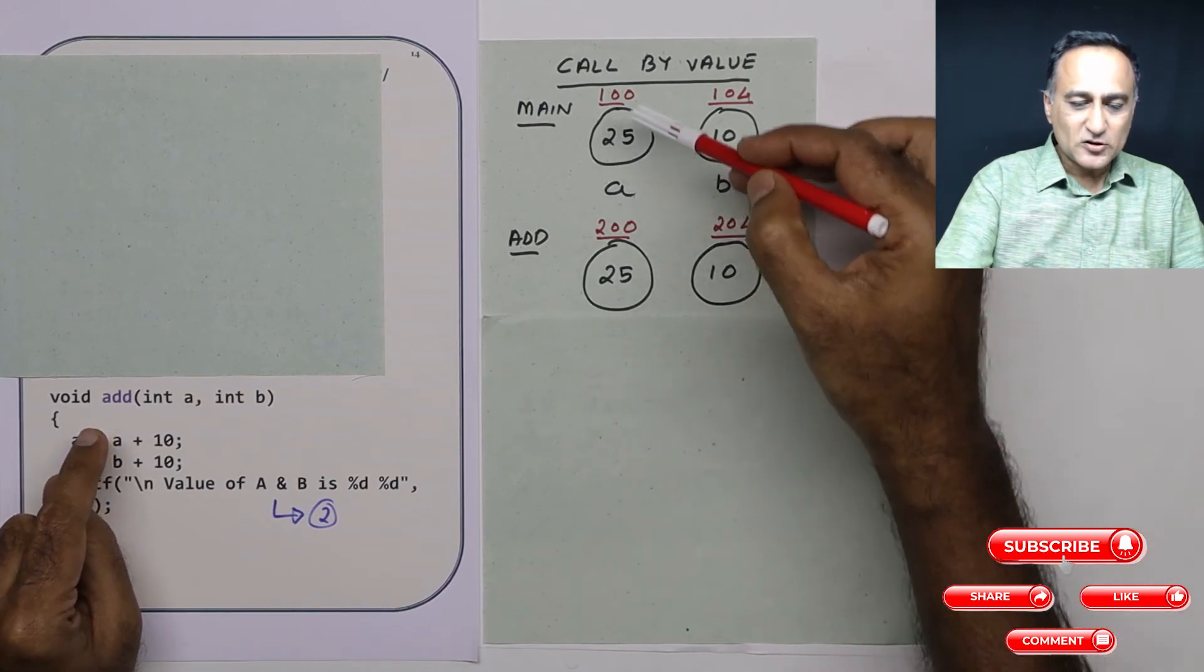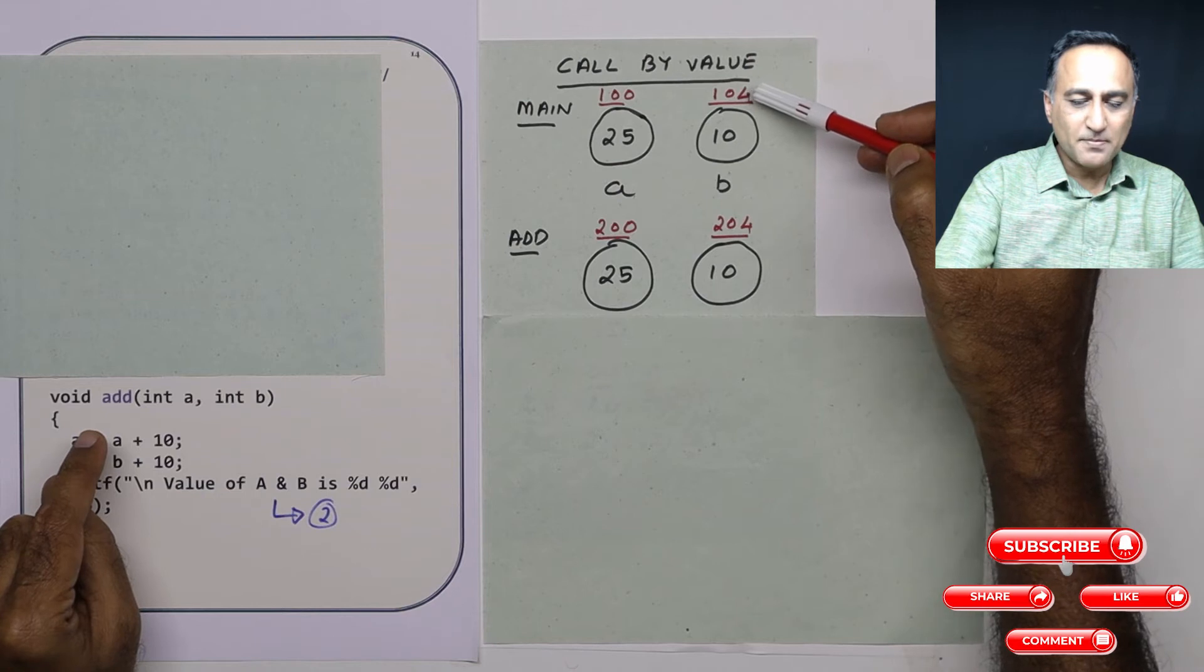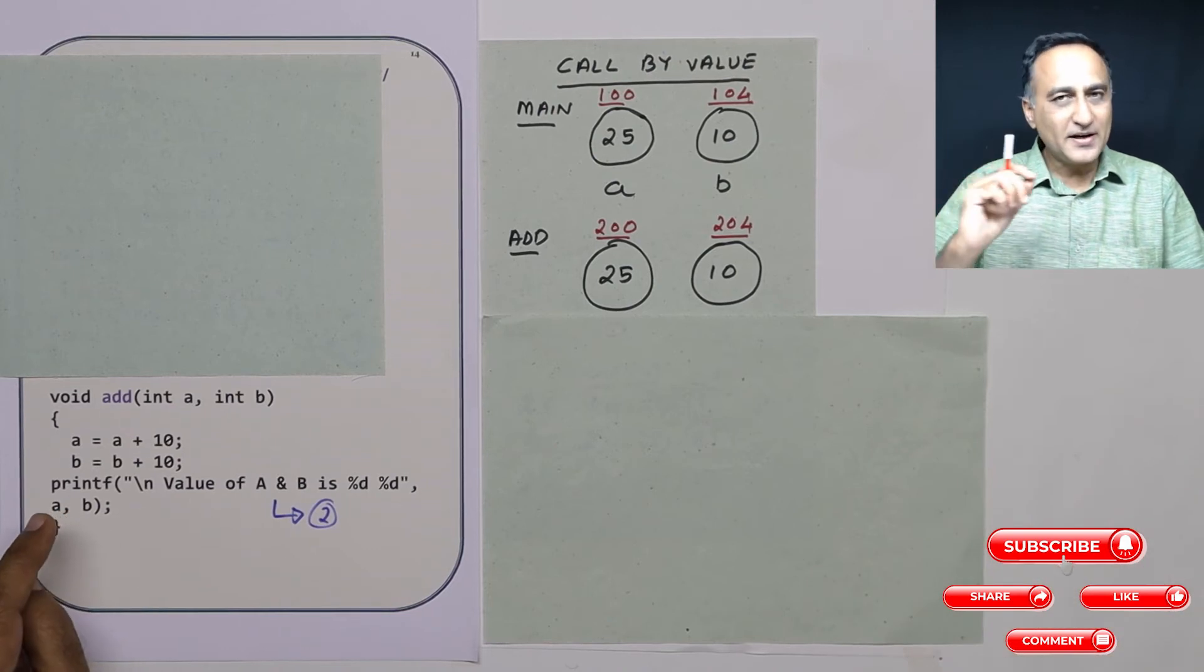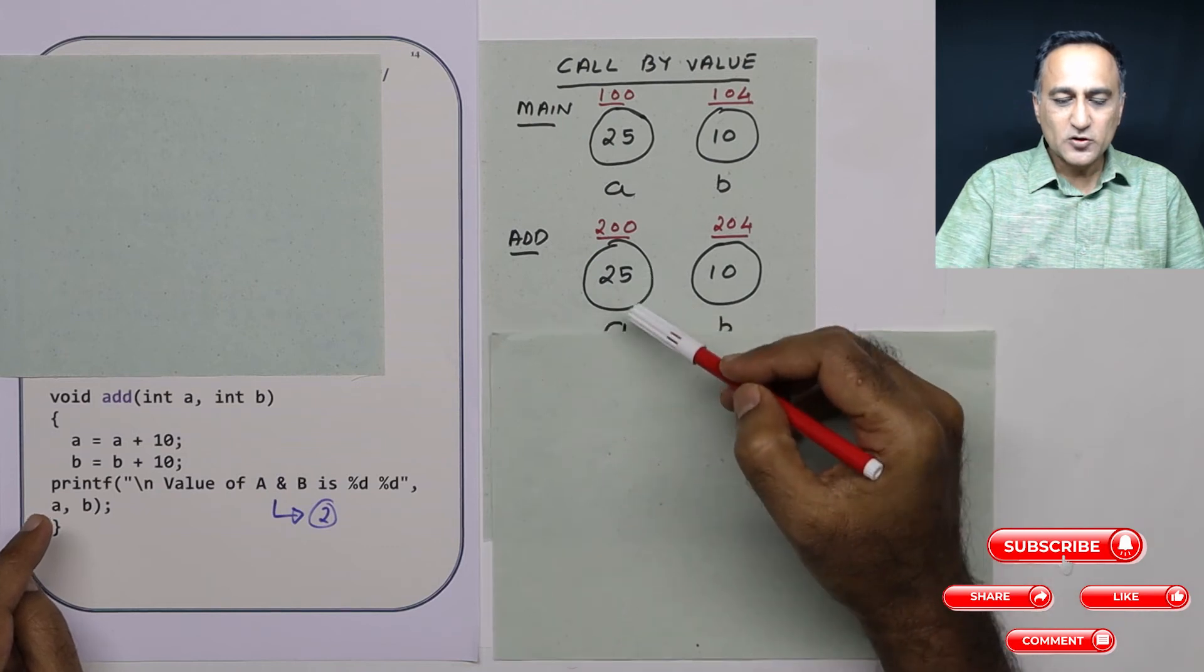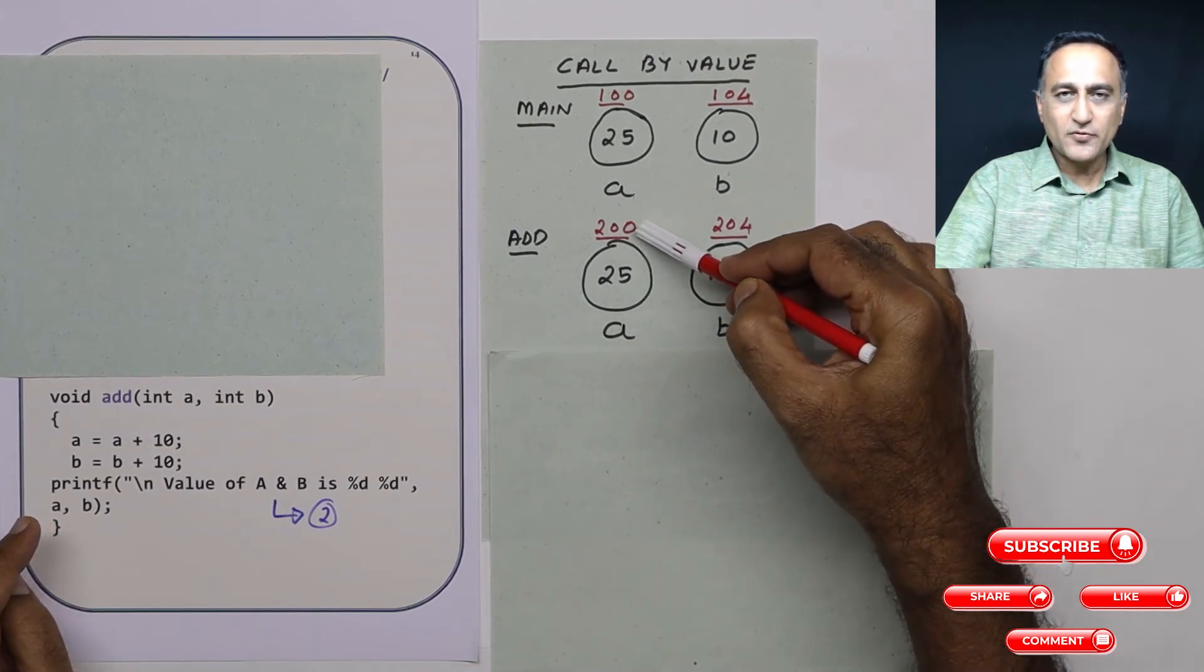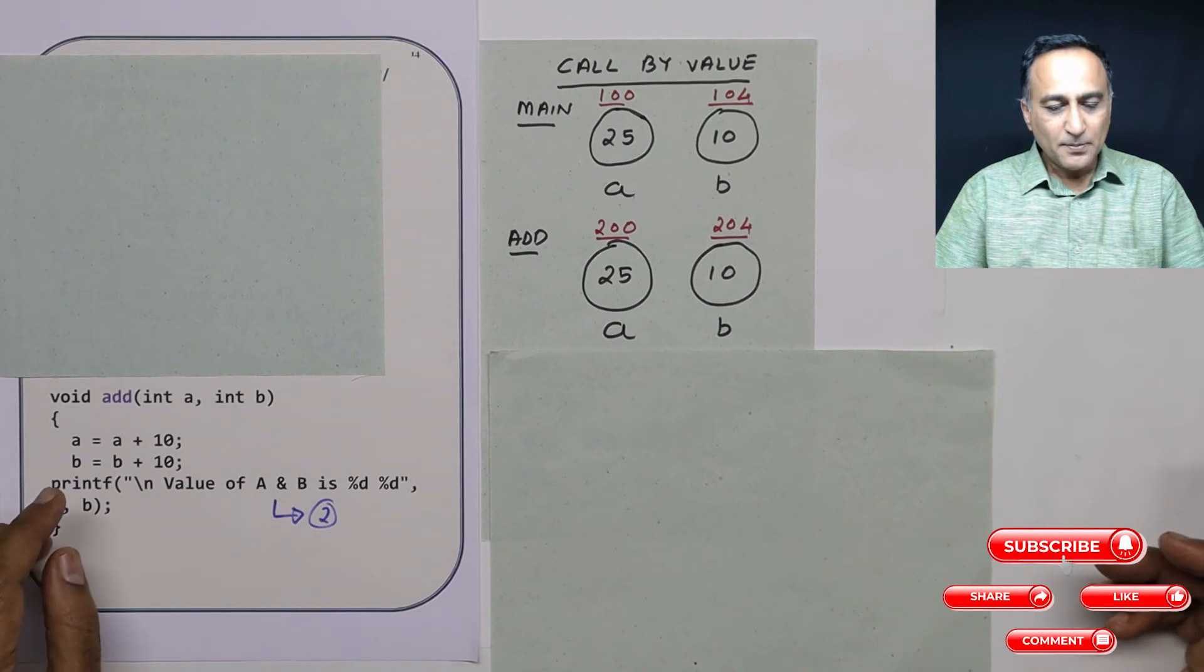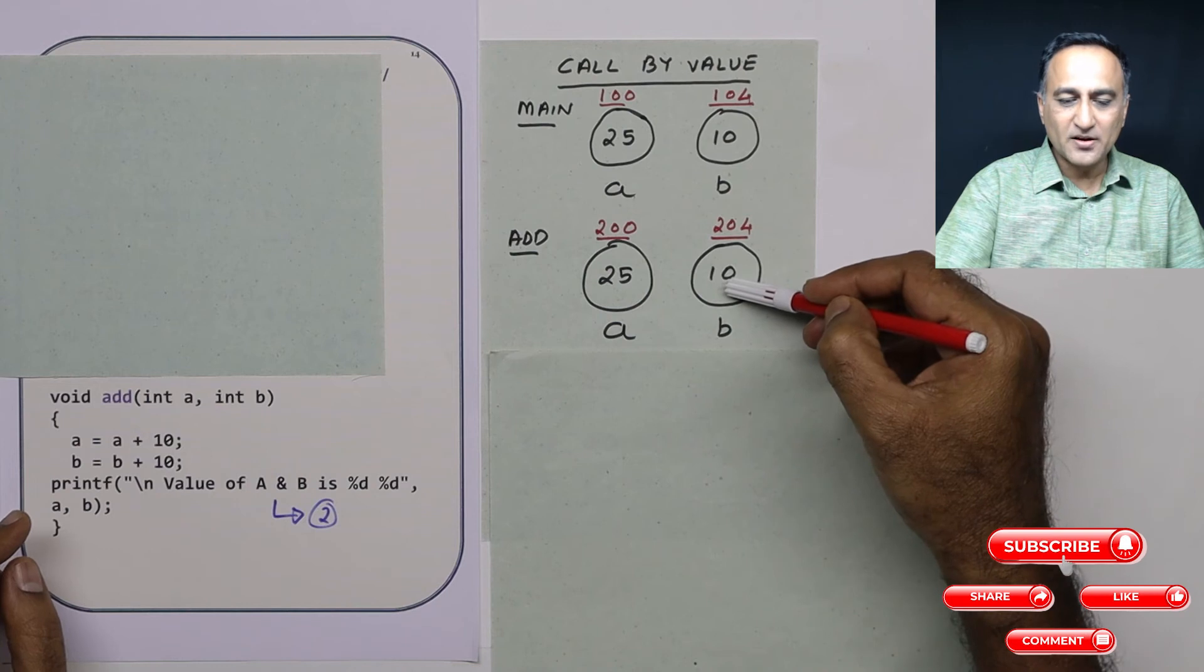For example, if the address of a was 100 in main and address of b is 104 in main, these two a and b are local to add and will have two completely different addresses because they are two completely different variables. So this a, for example, will have the address of 200, this may have the address of 204. But when you call add(a, b), 25 is copied here and 10 is copied here.